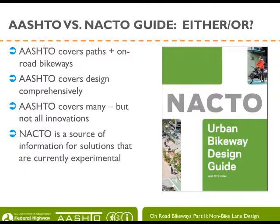The NACTO Guide is a design guideline developed primarily by large urban cities throughout the United States. It covers topics specific to bicyclists on roads and off roads, and is a great source for solutions that are currently experimental or newly implemented. NACTO provides considerations for newer treatments and is a great place to look for evolving treatments. AASHTO and NACTO should be seen as complementary design guidelines — there are many items in NACTO, such as bicycle stopping sight distance, that are critical for designers to understand.